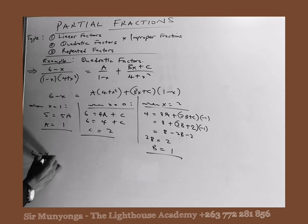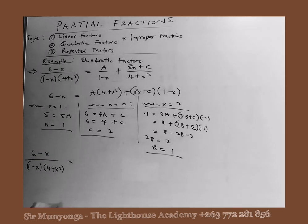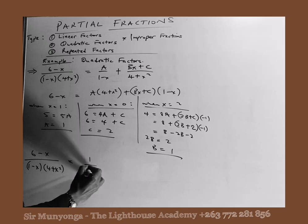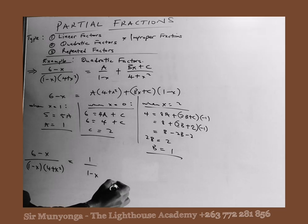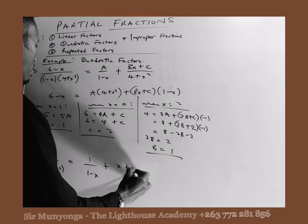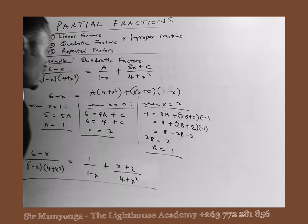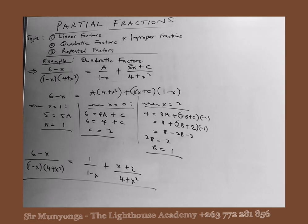We can now express the original fraction 6 minus x over (1 minus x)(4 plus x squared) as partial fractions. The result is: 1 over (1 minus x) plus (x plus 2) over (4 plus x squared). This is how we find the partial fractions of a fraction whose denominator contains quadratic factors.